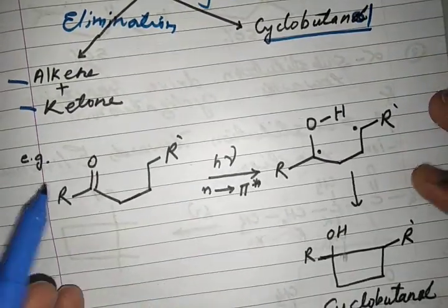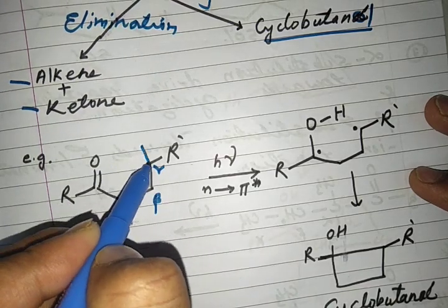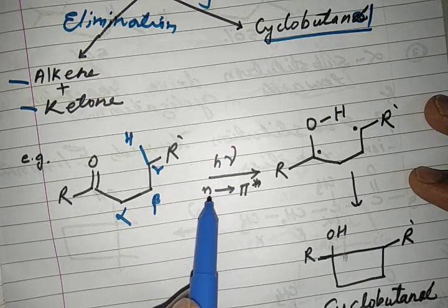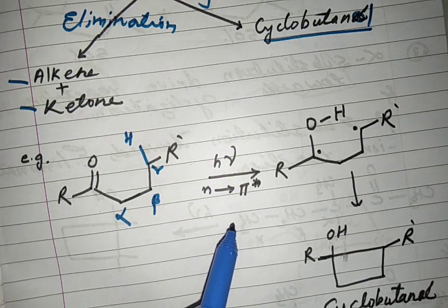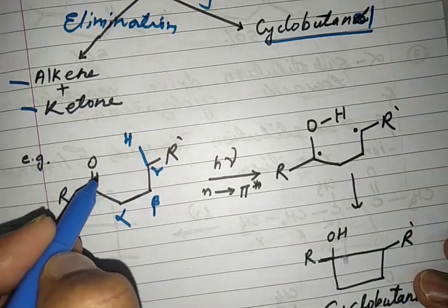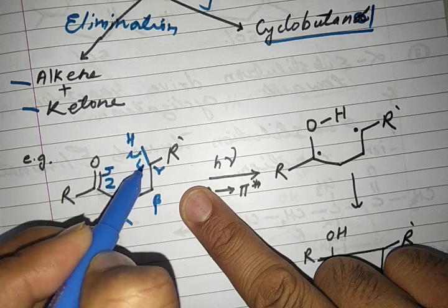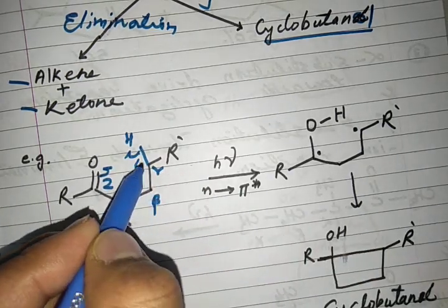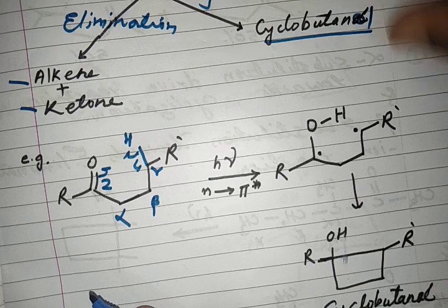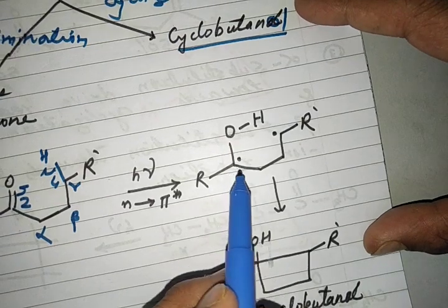Let us look at an example. Here we have a carbonyl, with alpha, beta, and gamma carbons. There are two hydrogens on the gamma carbon; I will draw only one here. On irradiation, an n→π* transition occurs, then singlet state, then intersystem crossing to the triplet state. The gamma C–H bond undergoes homolytic cleavage, with the hydrogen migrating to the oxygen through a six-membered transition state, forming a 1,4-diradical.